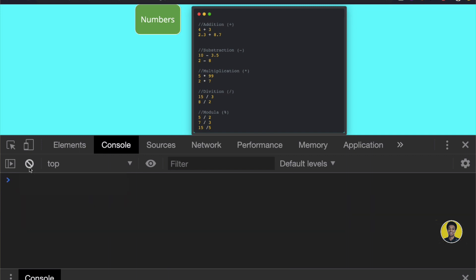It returns the result. Now let's look at subtraction. If I write 10 minus 3.5, it returns 6.5. We can also have negative results. If I write 2 minus 8, it returns minus 6.